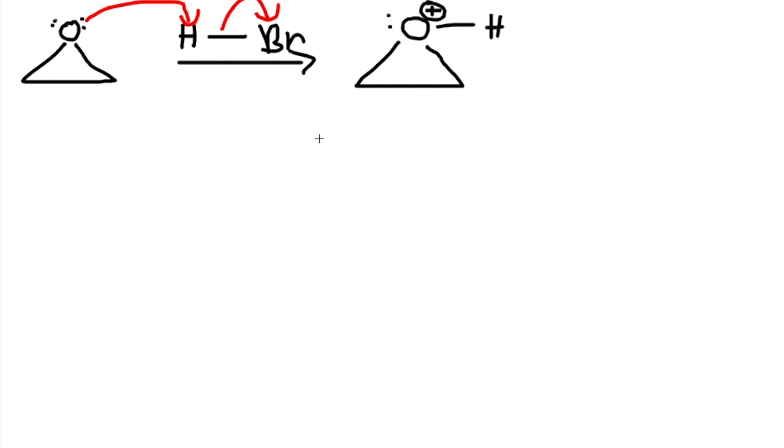And now we have this with a positive charge on the oxygen. Mechanism is very simple. Now the bromine comes in, attacks the carbon with the most amount of substituents, but in this case it doesn't matter. They're all equal.